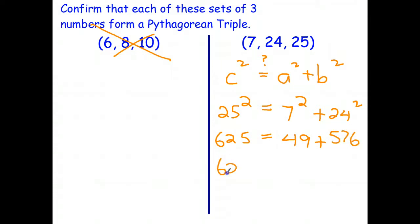And 625 equals 49 plus 576. If I do that in my head, I get 625. I should have put my question mark there. And then I can tick that one. So 7, 24, 25 is another Pythagorean triple.